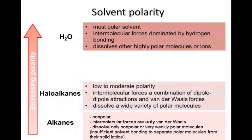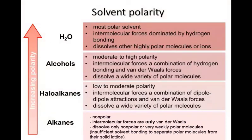At intermediate polarity, we have the halogenoalkanes or haloalkanes. They interact using a combination of van der Waals forces and dipole-dipole attractions, so they are good solvents for a variety of molecules that are also of intermediate polarity. And this is where the alcohols fit in. They're similar to the haloalkanes in that they lie between the two extremes of polarity, but they are able to form hydrogen bonds, which makes them better solvents for other molecules that can also hydrogen bond.